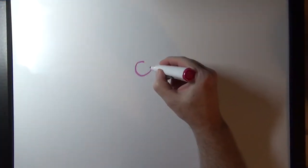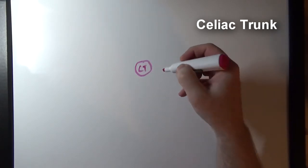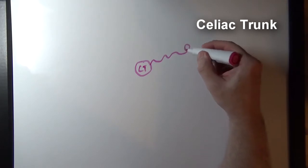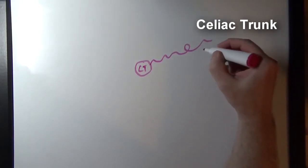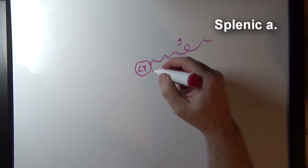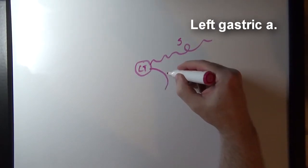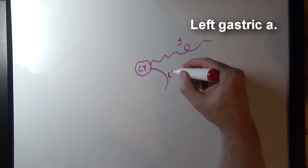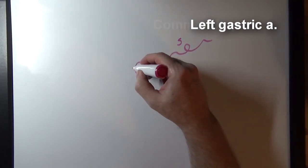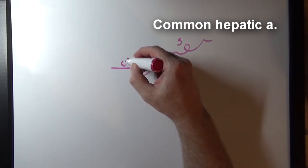We're going to start with the celiac trunk. Here's the celiac trunk branching off the abdominal aorta. It has three main branches: first, the splenic artery; second, the left gastric artery; and third, the common hepatic artery.